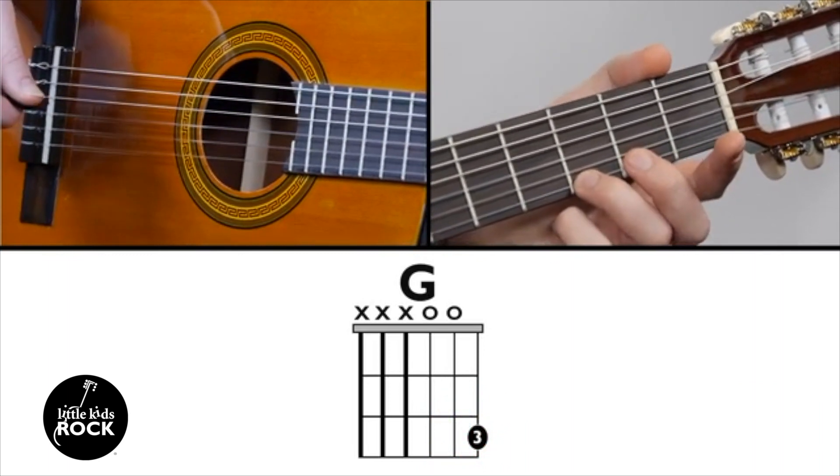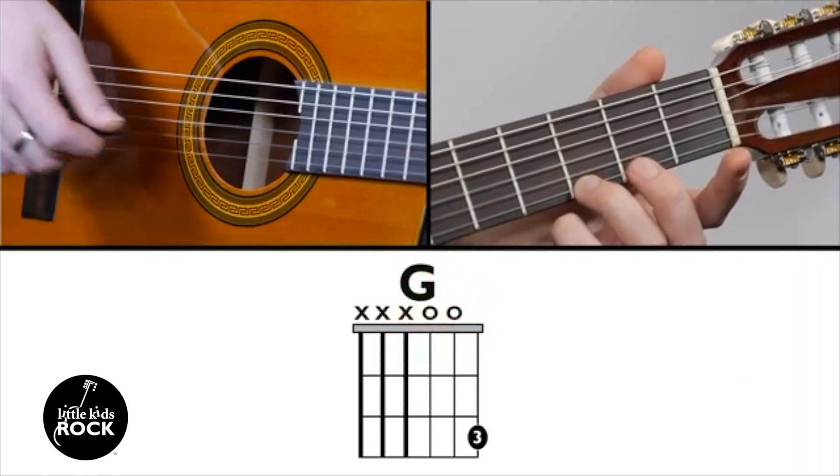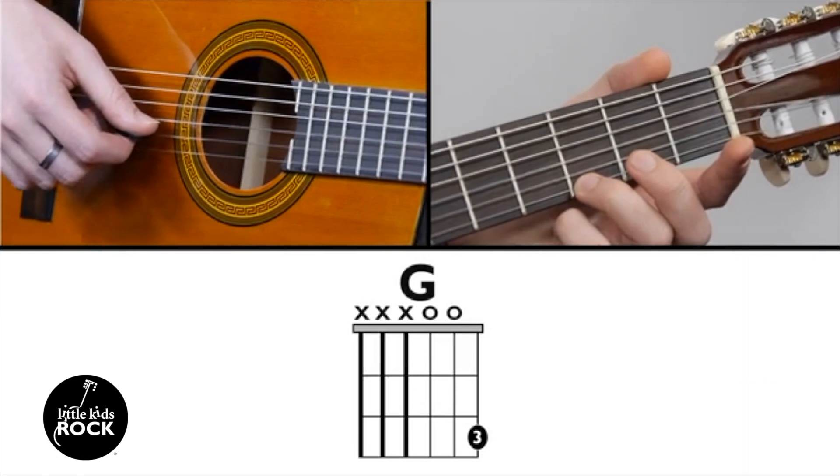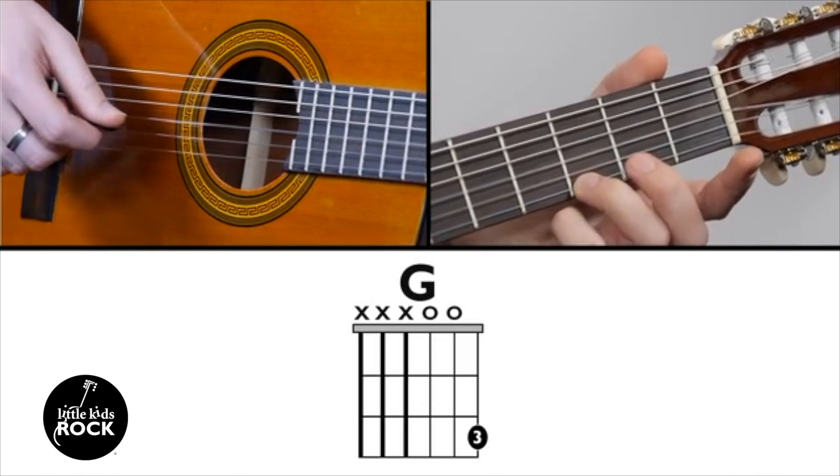Now, the second and third string, there's a zero above those two strings. That zero means play the string open. You could think of it as an O for open, means no finger.